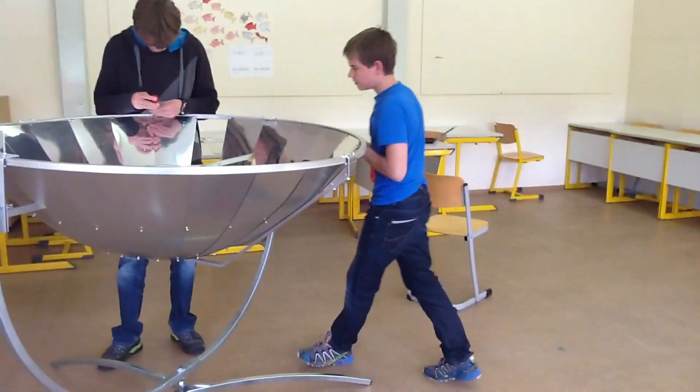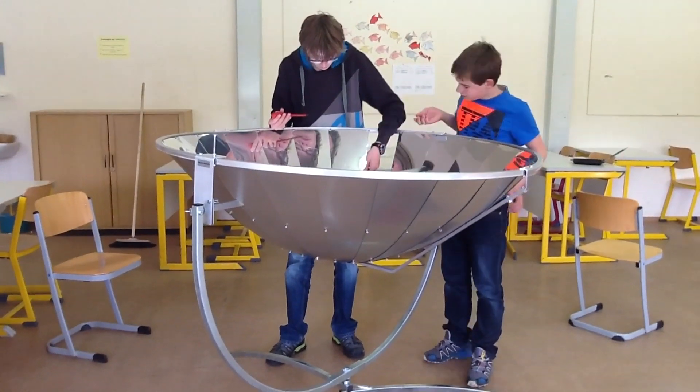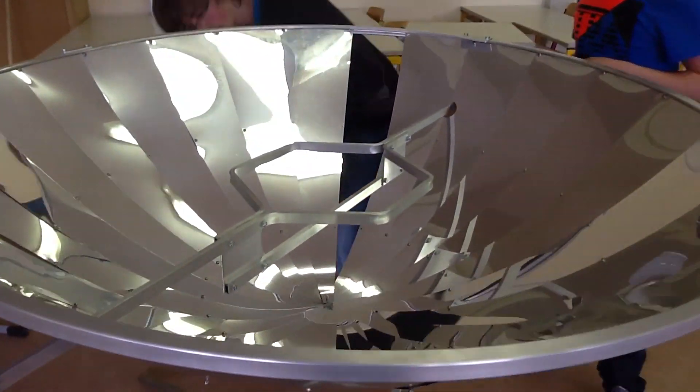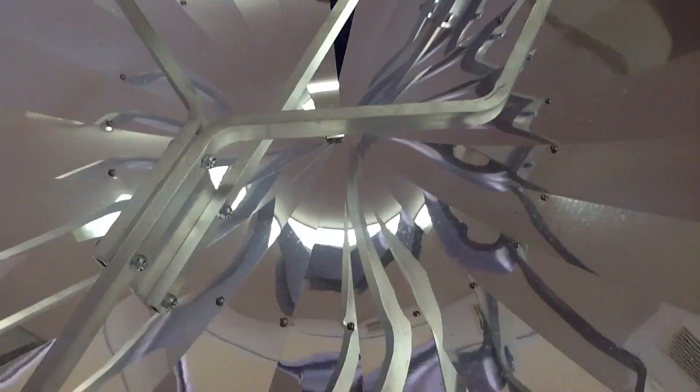It has a diameter of 1.4 meters and consists of 40 individual aluminum plates. This solar cooker costs about 400 euros.